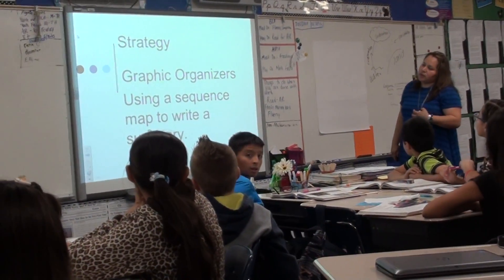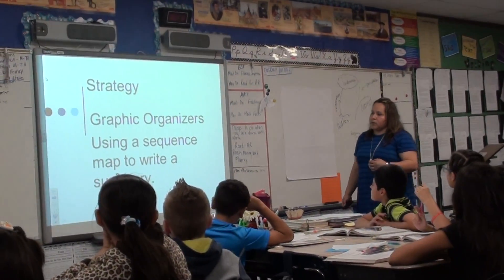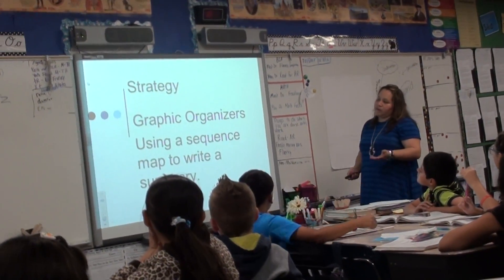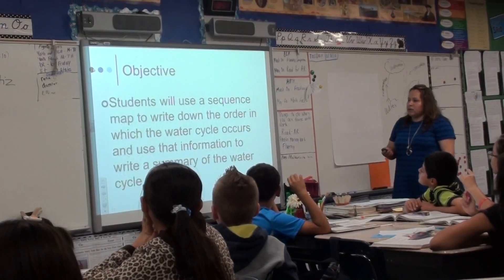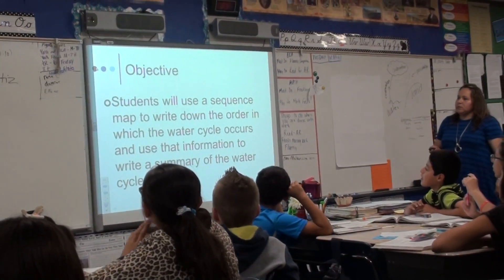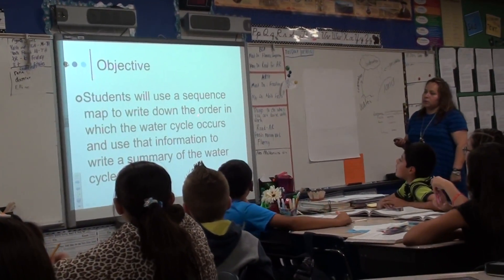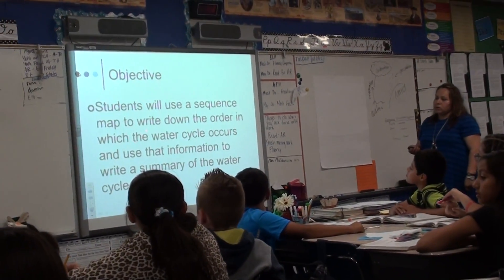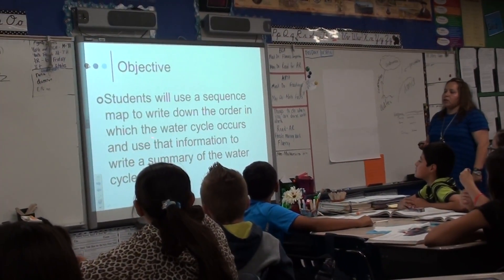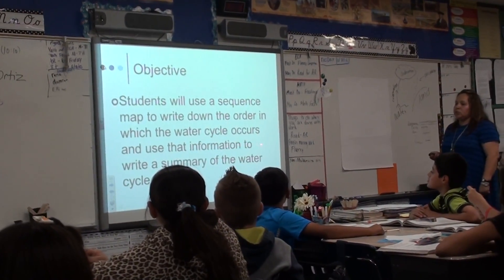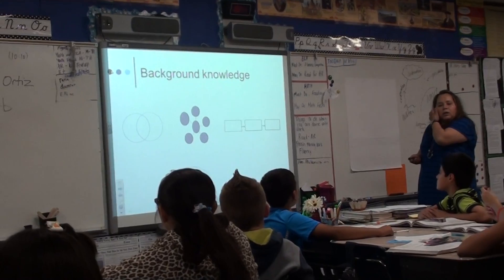Today we're going to use graphic organizers to write a summary about the water cycle. The graphic organizer we're going to use is called a sequence map. Can you read the objective with me, please? Students will use a sequence map to write down the order of the water cycle and use that information to write a summary of the water cycle.